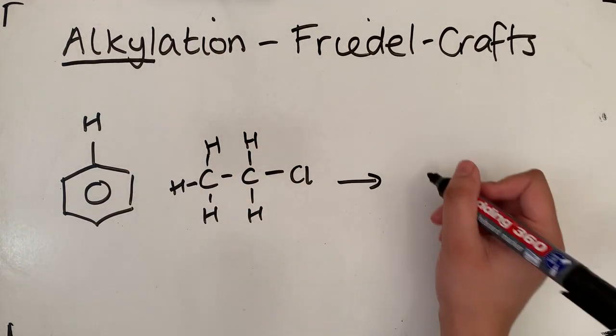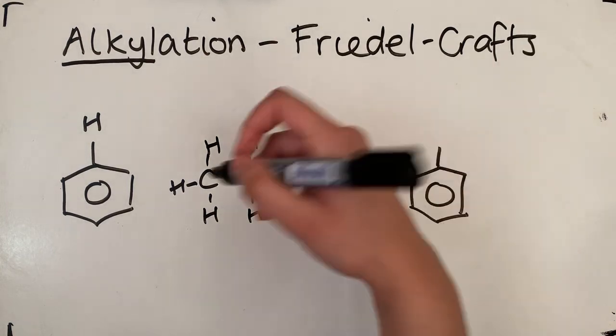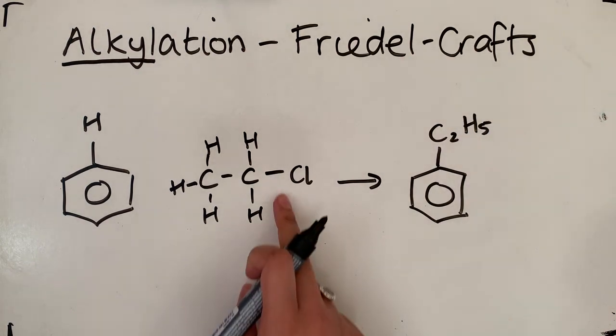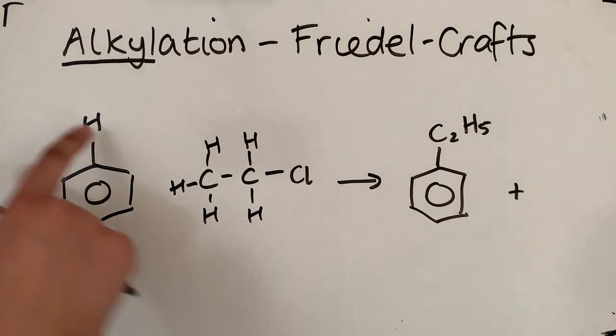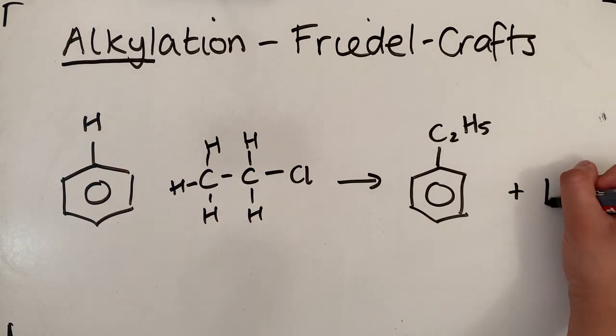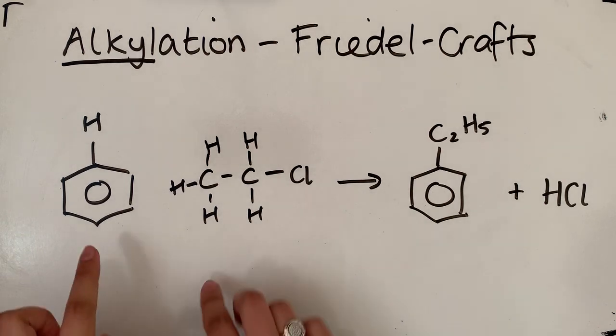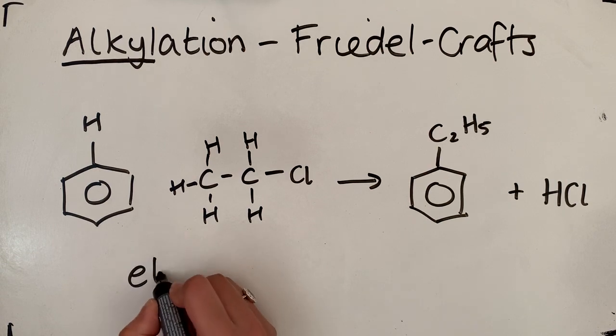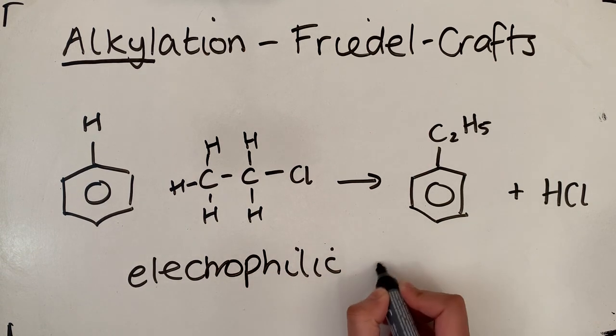So overall reaction, we're going to substitute that hydrogen with the ethyl chain, C2H5, which is this part over here. And the other product is going to be that hydrogen and that chlorine making our HCl. So as you can see, this is going to be a substitution reaction. We've got two reactants, two products. And again, this is going to be electrophilic substitution.